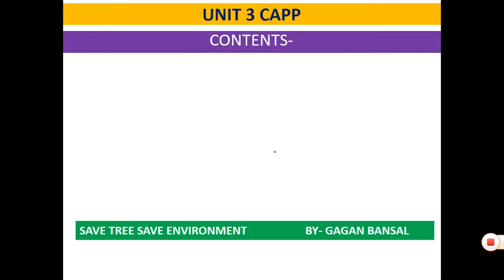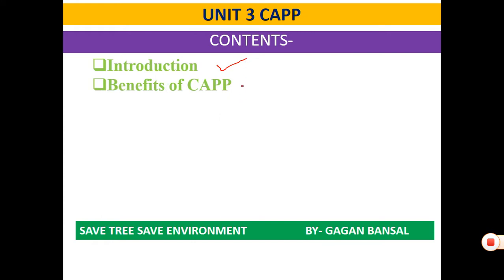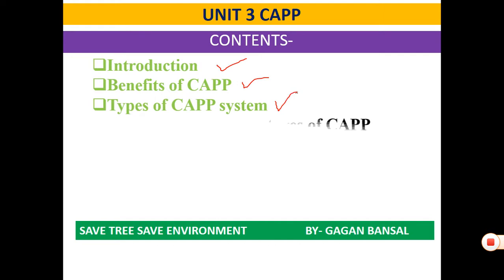Till now, in Unit 3 — that is computer-aided process planning — we have studied various topics like introduction to computer-aided process planning, benefits of computer-aided process planning, and types of computer-aided process planning systems.